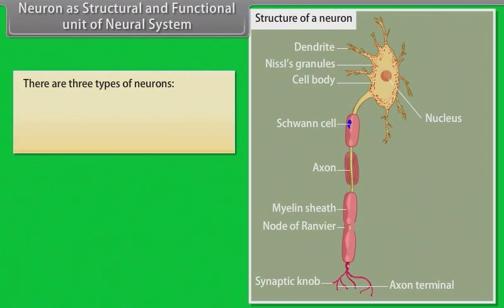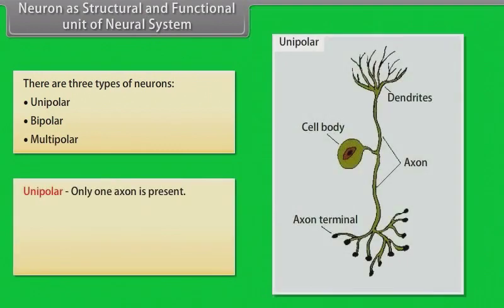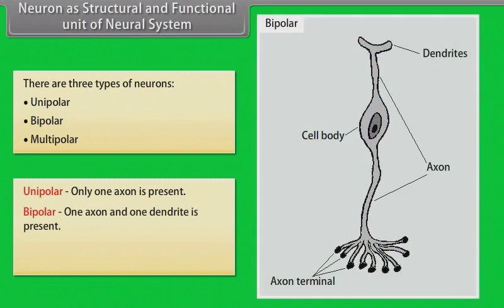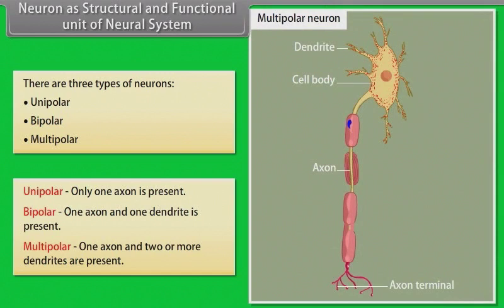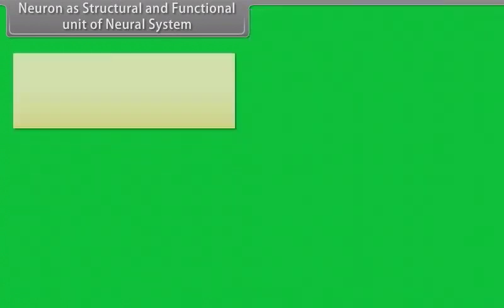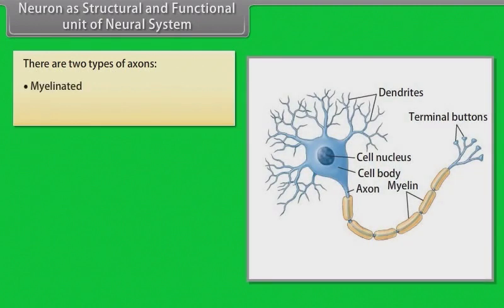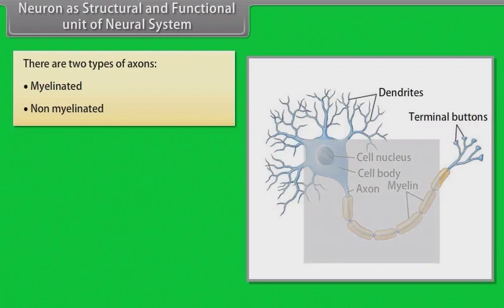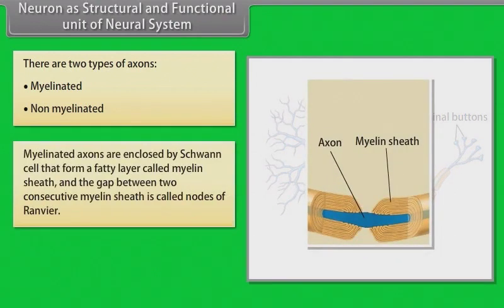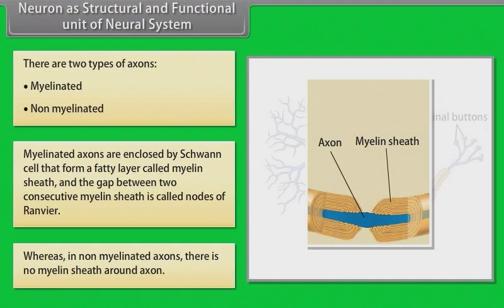There are three types of neurons: unipolar, bipolar, and multipolar. Unipolar has only one axon; bipolar has one axon and one dendrite; multipolar has one axon and two or more dendrites. There are two types of axons: myelinated and non-myelinated. Myelinated axons are enclosed by Schwann cells forming a fatty layer called myelin sheath. The gap between two consecutive myelin sheaths is called nodes of Ranvier. Non-myelinated axons have no myelin sheath.